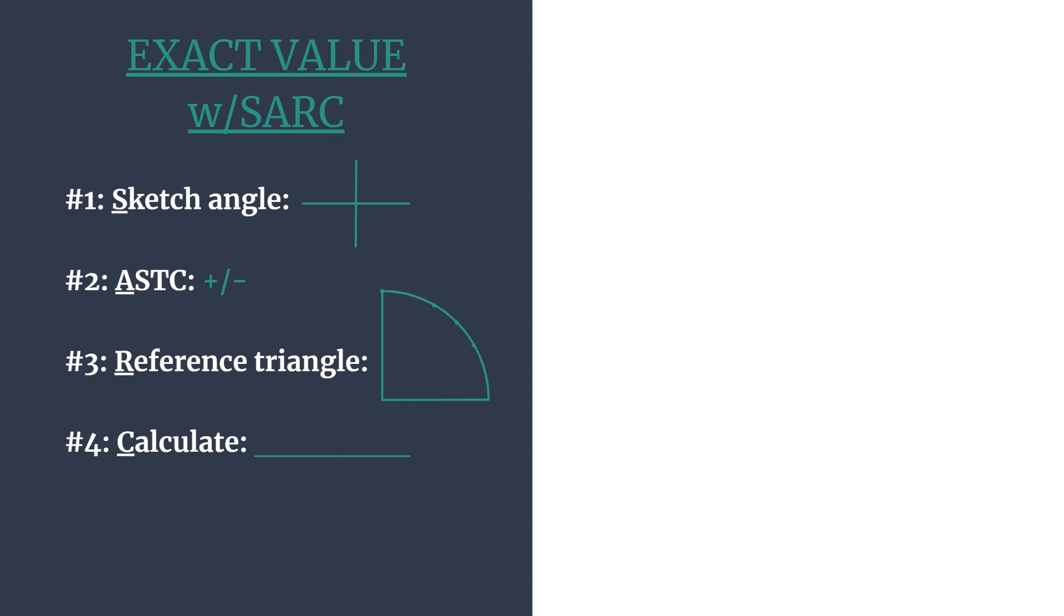R stands for reference triangle. So we'll find the reference angle, and then the special right triangle and coordinates that go with that angle. The C stands for calculate. So we'll calculate our specific trig ratio.